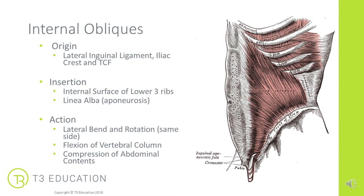So although very similar to the external obliques and also performing some of the same actions as the wider abdominal group, you can see even from the illustration how lack of movement or congruency between those various abdominal muscles can cause problems, especially pulling on the midline.